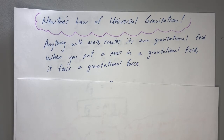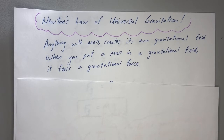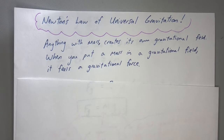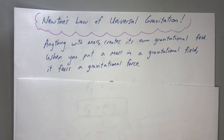Law number two: F equals m times a, or in momentum terms, F equals dp/dt — the derivative of momentum with respect to time. And law number three: for every action, there is an equal and opposite reaction. We'll often draw an object on a tabletop with Fg going down and the normal force going upward from contact. Keep those Newton's laws in mind as we go forward toward the AP test.